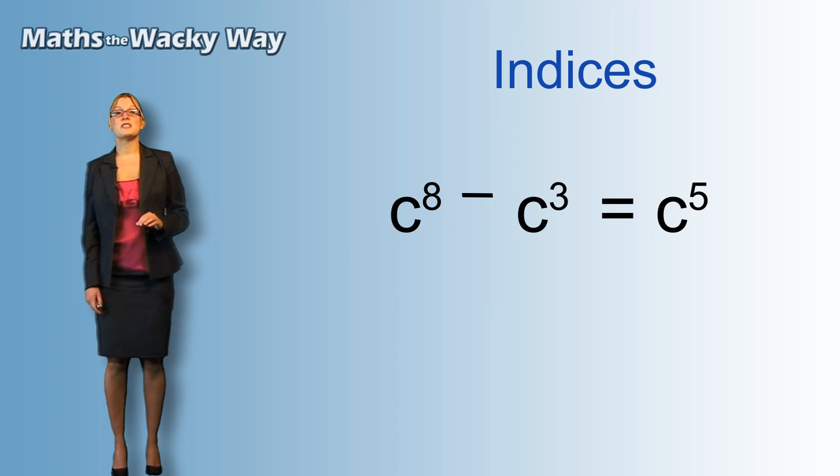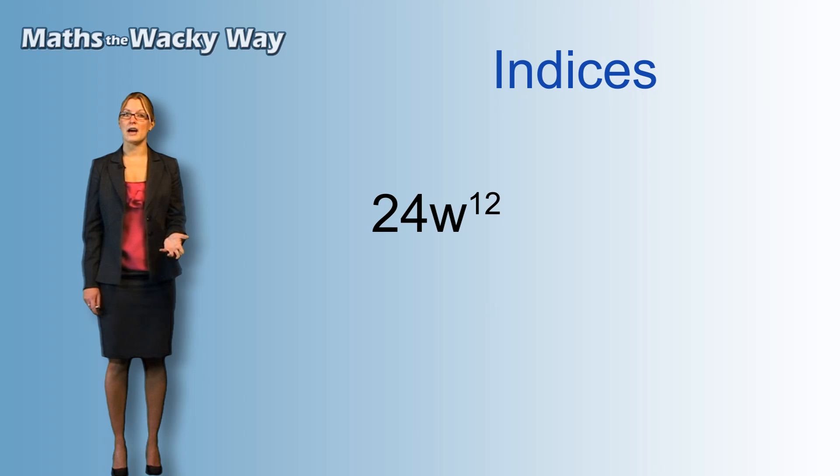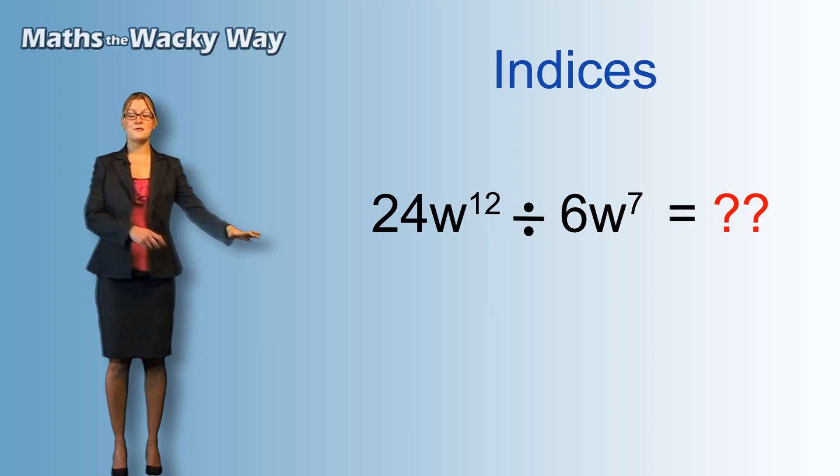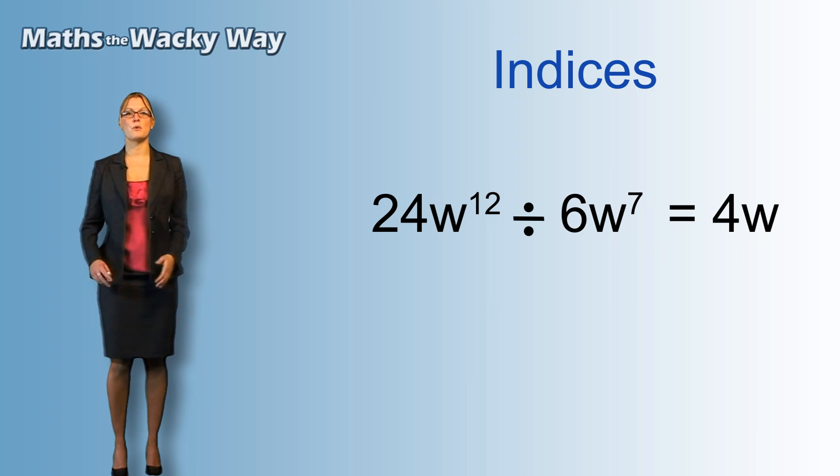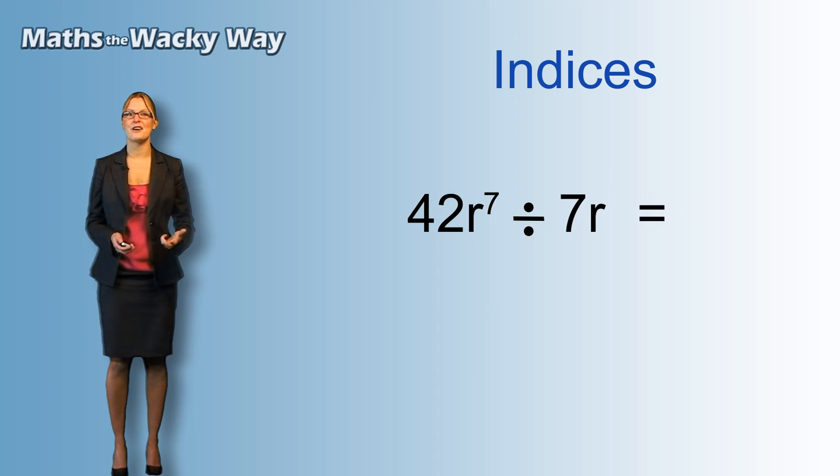Now we can make these ones a bit tougher by introducing numbers in front of the unknowns. Just like before it's all about levels. If we have 24w to the power of 12 divided by 6w to the power of 7, we're going to do the 24 and the 6 first. They're on the level of the division, so 24 divided by 6 is 4. We've then got the w, but we're going up in the air, so the divide's going up, losing its dots, so we have 12 take away 7, which gives us 5. Pull it all together, we have 4w to the power of 5. Now we can do it again. 42r to the power of 7 divided by 7r. Again we've got our levels, but we've also got r on its own, which is r to the power of 1. So 42 divided by 7 is 6. If we've got r to the 7 divided by r, that's r to the power of 6. Pull it together, we get 6r to the power of 6.